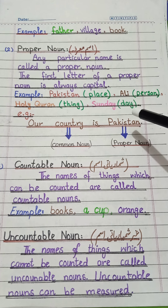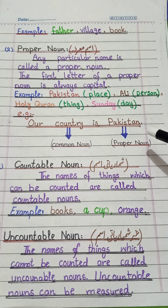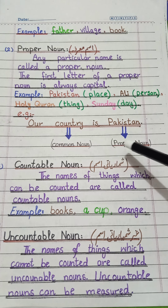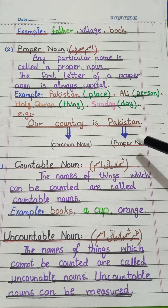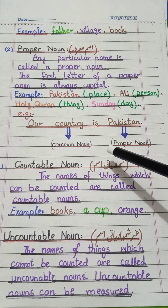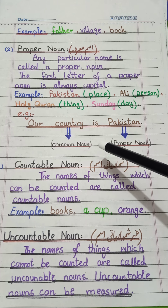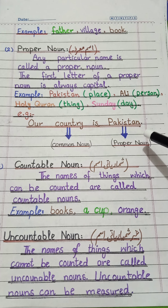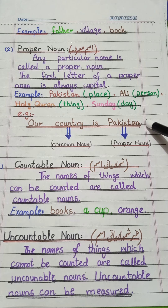Here is an example sentence: 'Our country is Pakistan.' In this sentence, 'country' is a common noun — it can refer to any country like America or India. But 'Pakistan' is a proper noun. Every country has its own specific name. Every person has their own specific name. That's why we call this kind a proper noun.